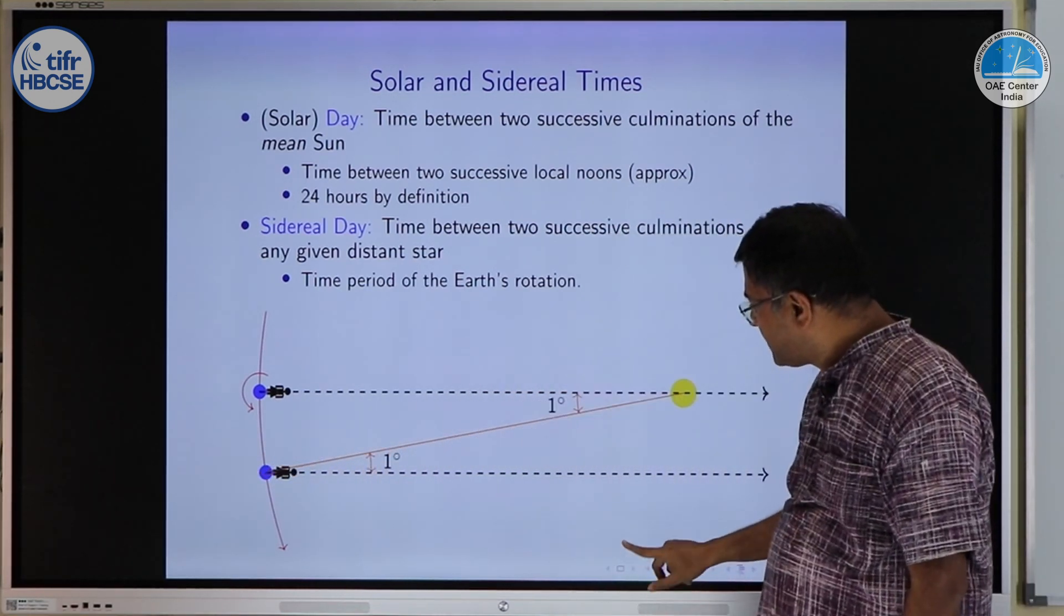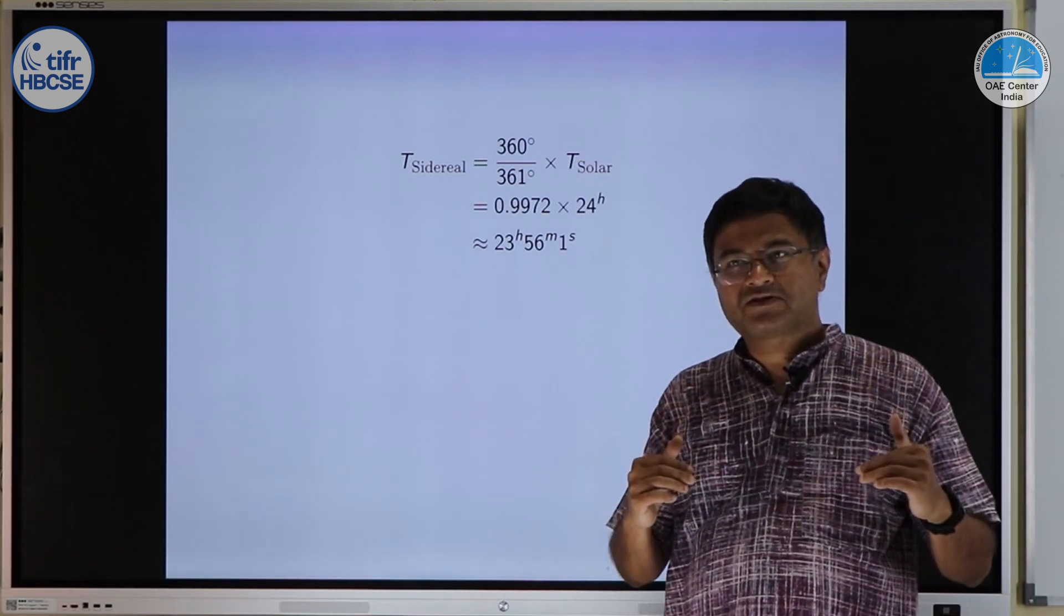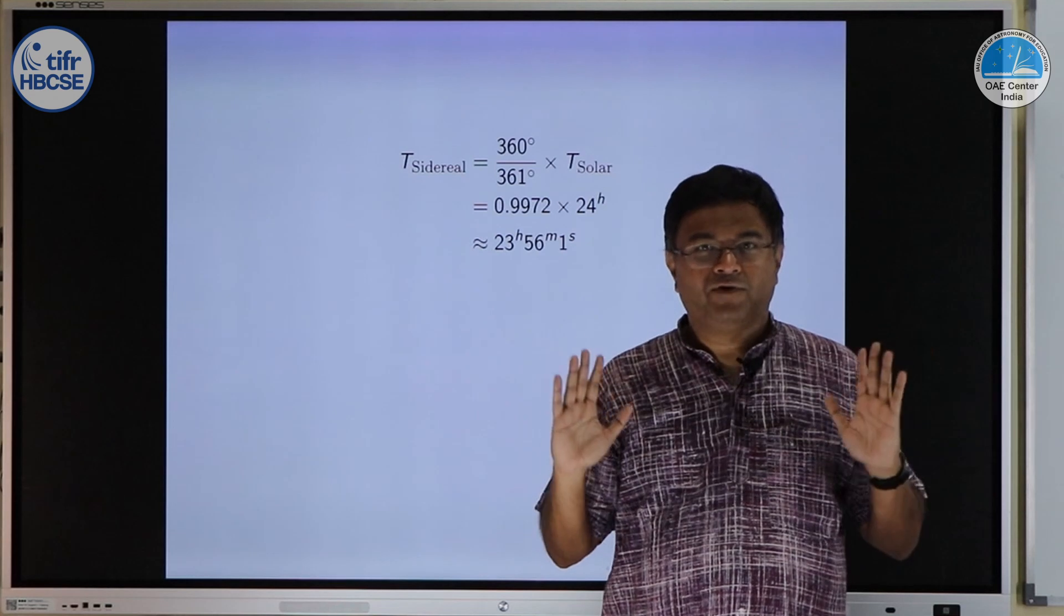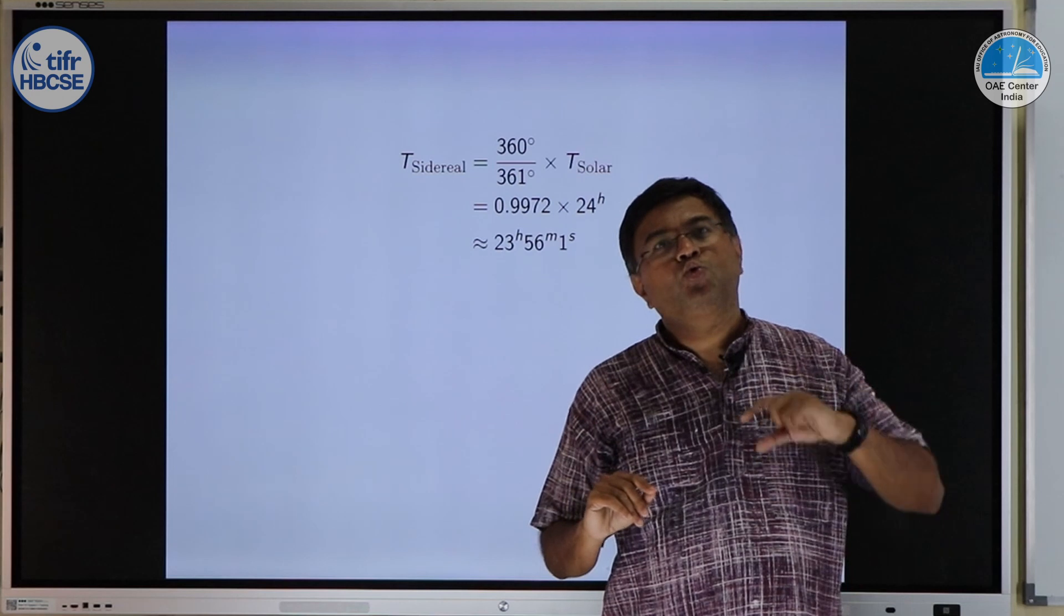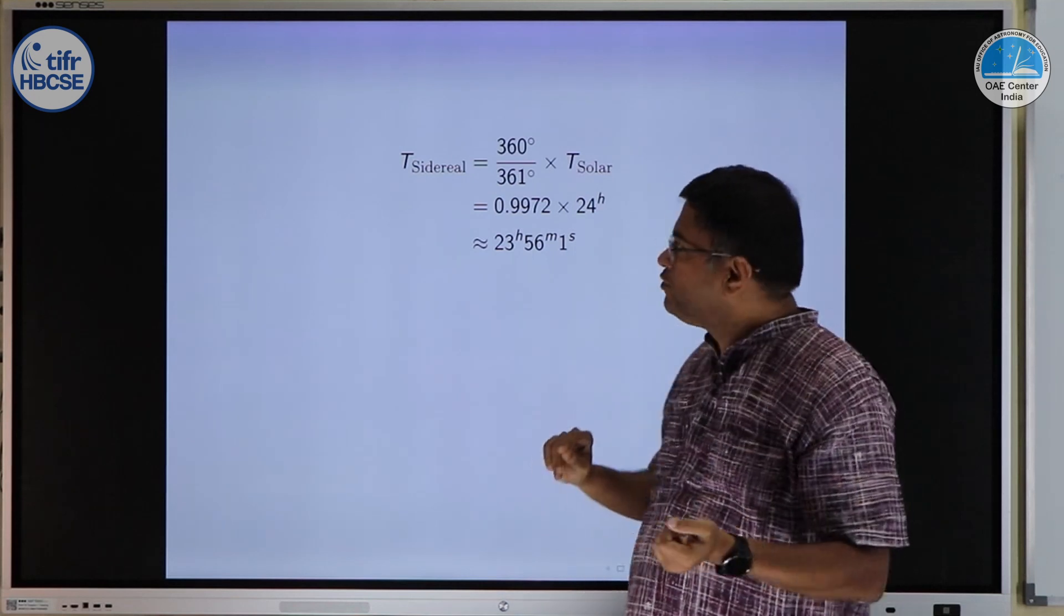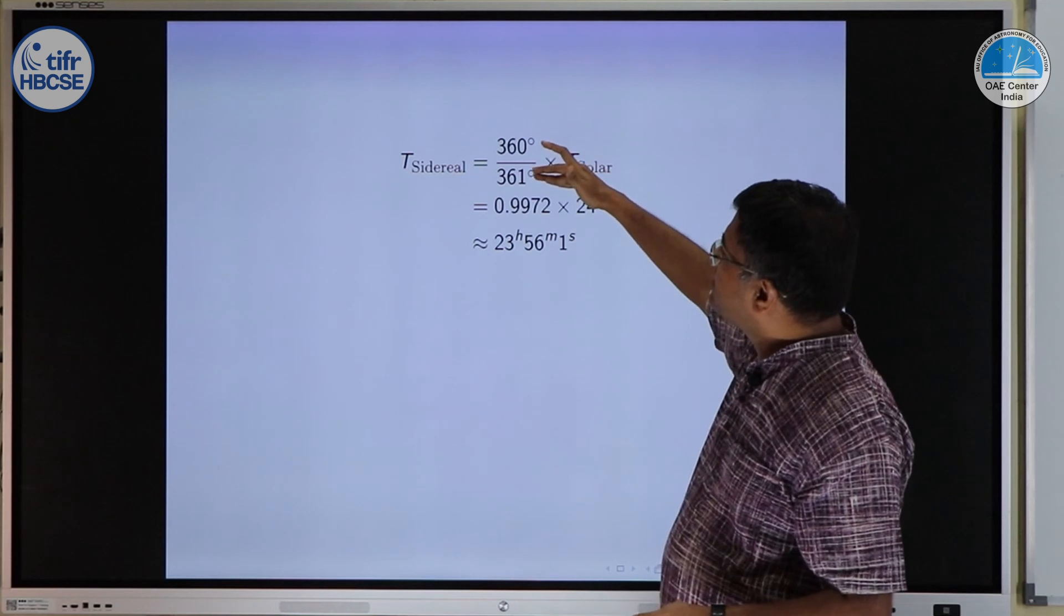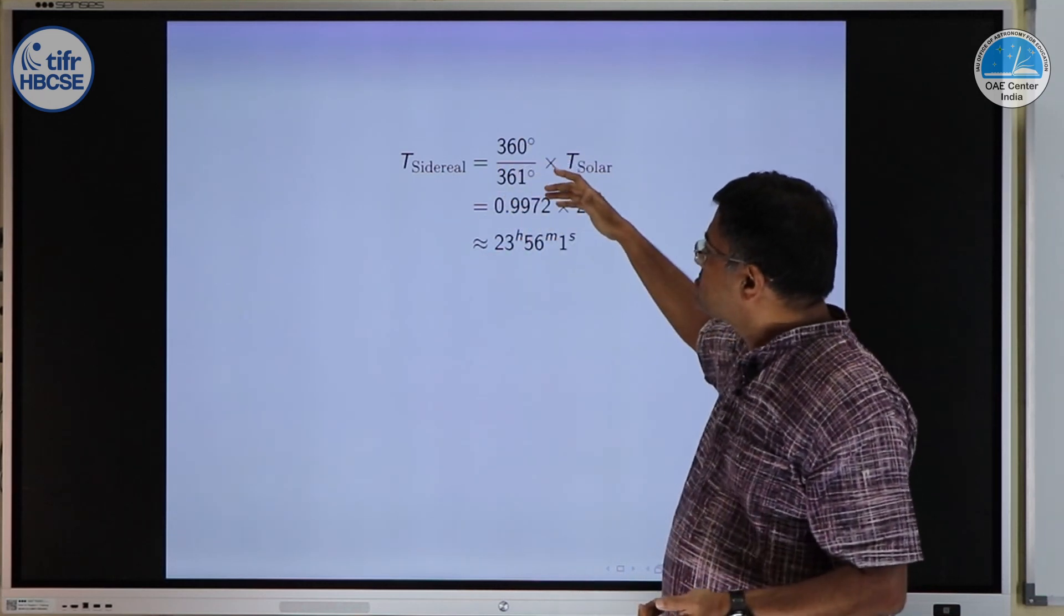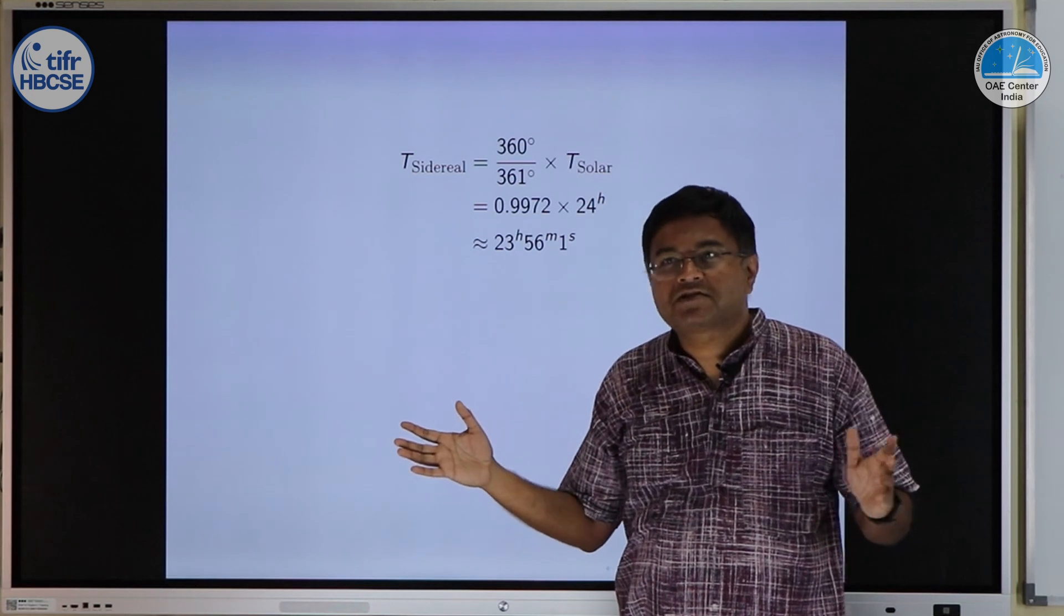How to use that? When 360 degrees got completed, we have got one sidereal day finished. But to complete one solar day, we need to do one additional degree of rotation, so 361 degrees. If you use that, you will realize that sidereal day length will be just 360 by 361 times solar day length. And solar day length is defined as 24 hours. If you substitute this number, you will get roughly the answer at 23 hours and about 56 minutes, 1 second.